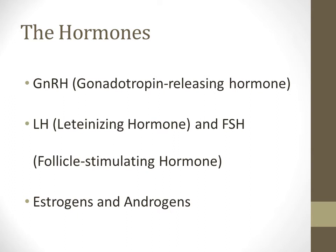GnRH, or gonadotropin releasing hormone, is found in the hypothalamus. LH and FSH are secreted from the anterior pituitary gland. And then estrogens and androgens are found in the gonads of the respective male or female.